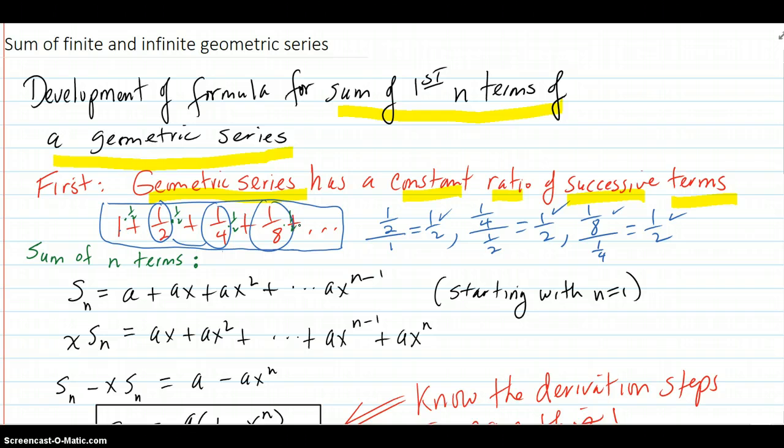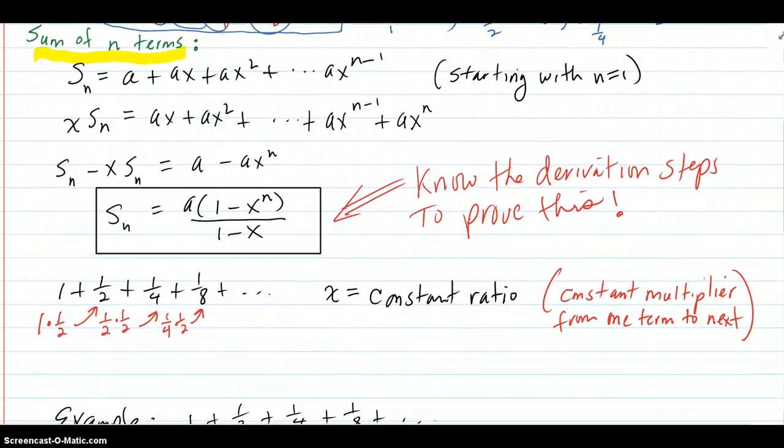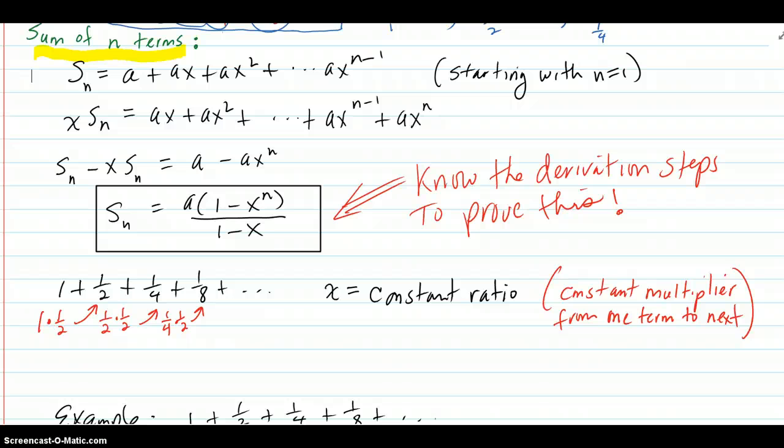We want a sum of the n terms, the first n terms. We write down, in general, what the sum is. If you start with your first term, a, and then you multiply that by that constant ratio, which is x.